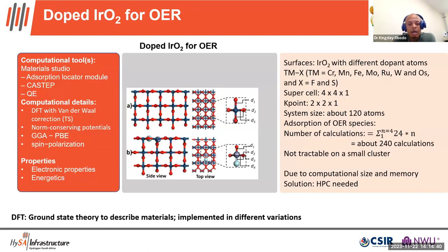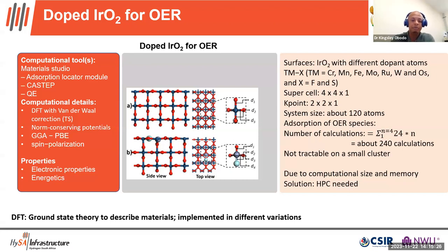Since the title of my talk concerns computational modeling and high-performance computing, we use ab initio modeling using CASTEP, and we are interested in energetic and electronic properties. The number of calculations we are doing is over 240, with system sizes of about 120 atoms. Carrying out this kind of computation on a local desktop would take a couple of years just for this one study.